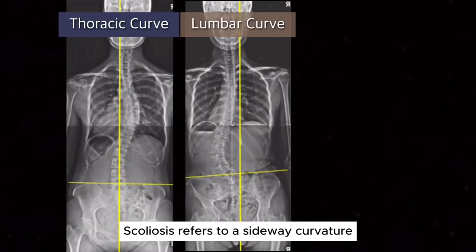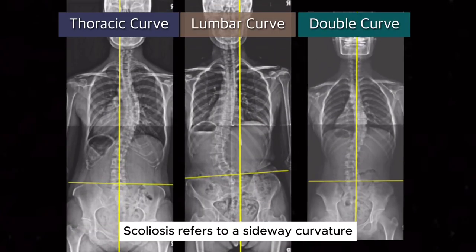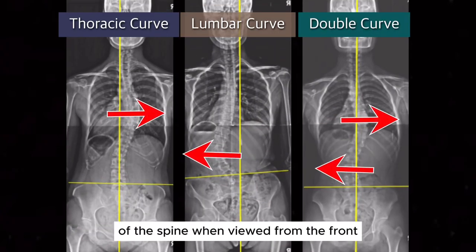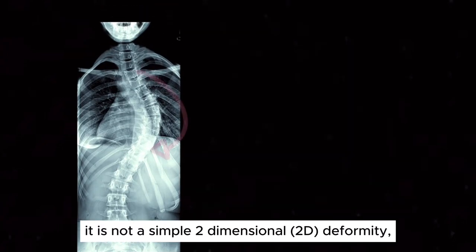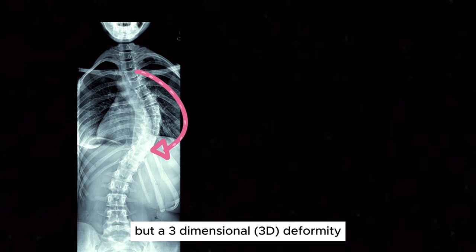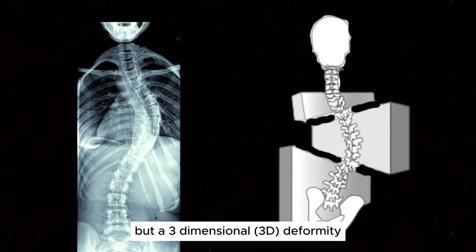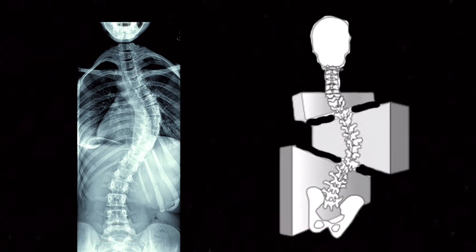Scoliosis refers to a sideways curvature of the spine when viewed from the front. But in reality, it is not a simple two-dimensional deformity, but a three-dimensional deformity.